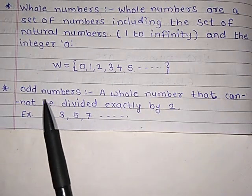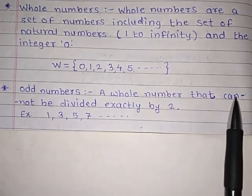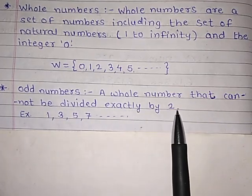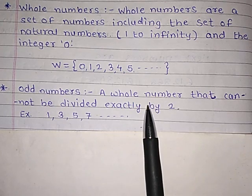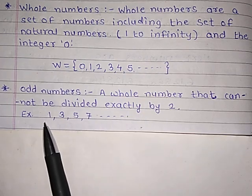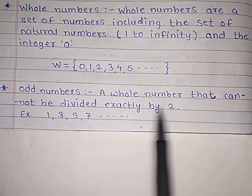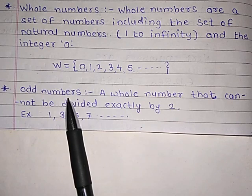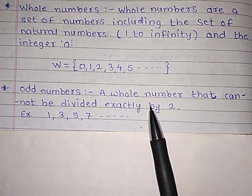Next: odd numbers. That is a whole number that cannot be divided exactly by 2. When we divide such numbers, a remainder of 1 remains — for example, if 3 is divided by 2, the remainder will be 1. Such numbers are called odd numbers. For example: 1, 3, 5, 7, 9, and so on.